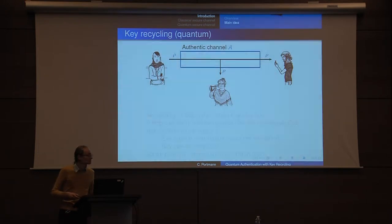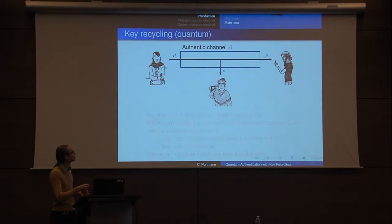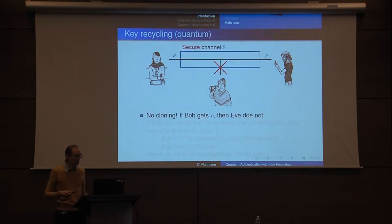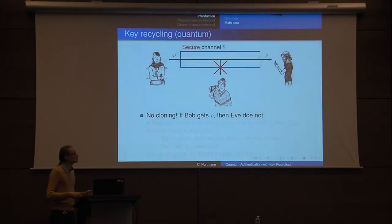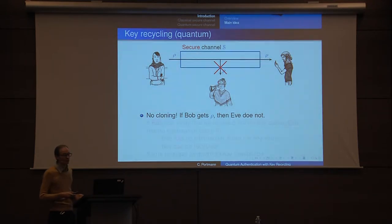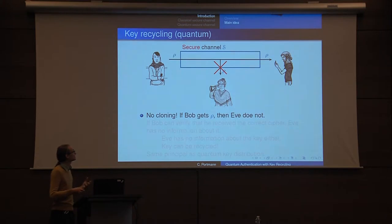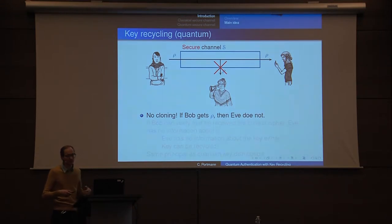If we think of doing this in the quantum case and Alice sends a state ρ, Bob gets a version and Eve gets a version. This cannot work because of the no-cloning theorem, which says a quantum state can't be copied. So if Bob actually receives ρ, he knows that Eve doesn't have a copy of it. There's no such thing as an authentic channel which doesn't also provide confidentiality in the quantum case.